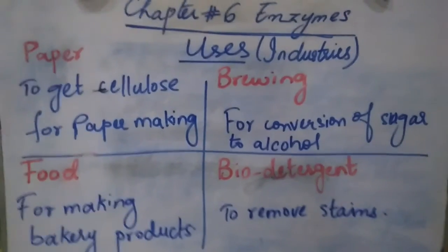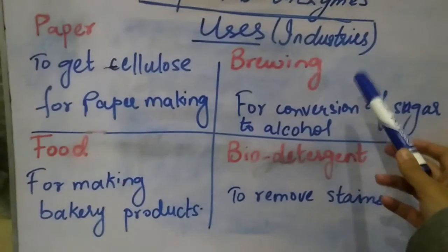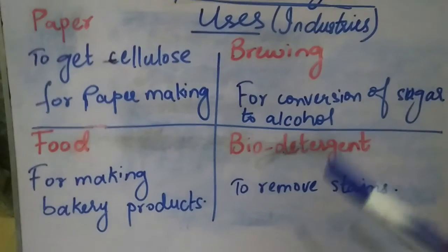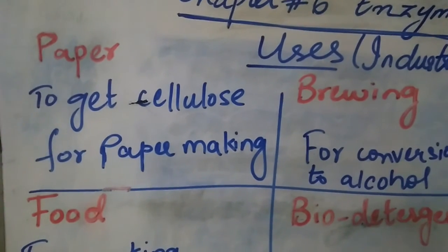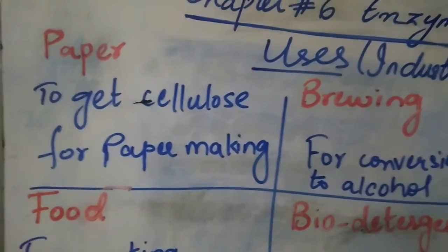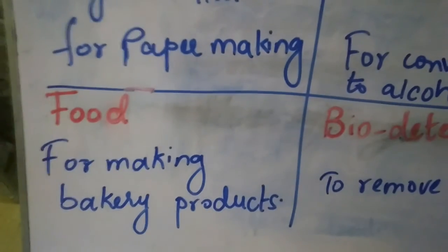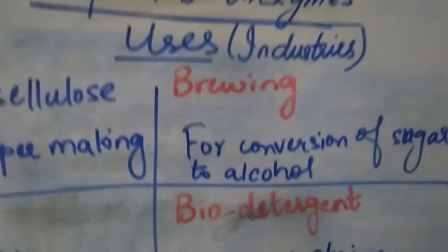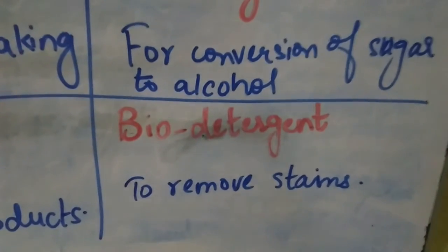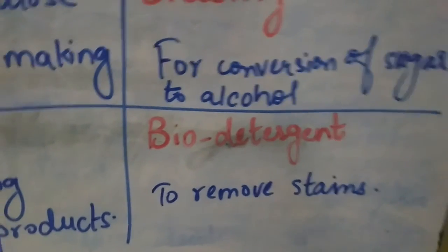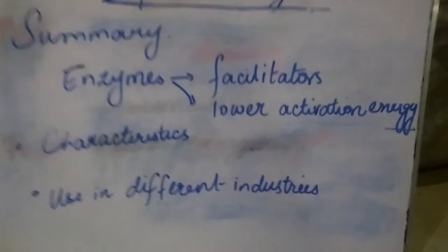Coming towards the last topic of our video: the uses of enzymes. These enzymes are used in industries. Number one is the paper industry, where they help in obtaining cellulose, the major component for making paper. In the food industry, they help in making bakery products. In the brewing industry, they help to convert sugar into alcohol. In the bio-detergent industry, they help to remove different kinds of stains. In summary, enzymes are basically the facilitators.